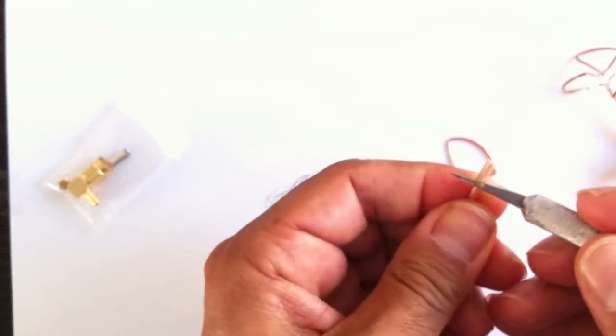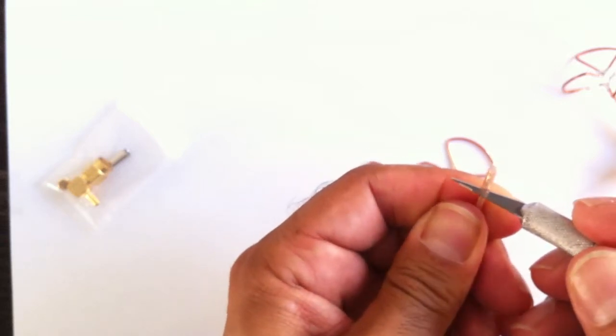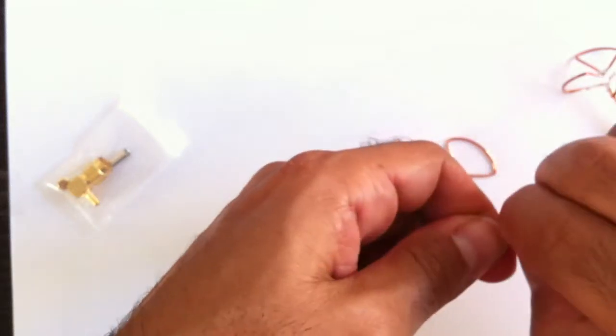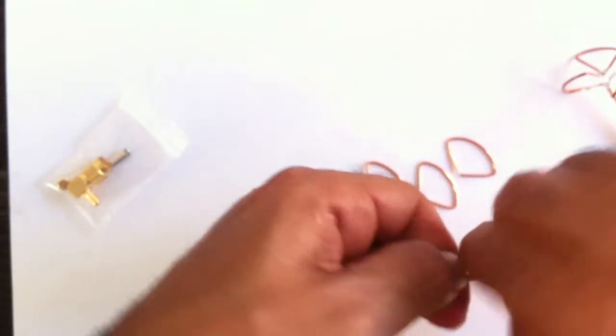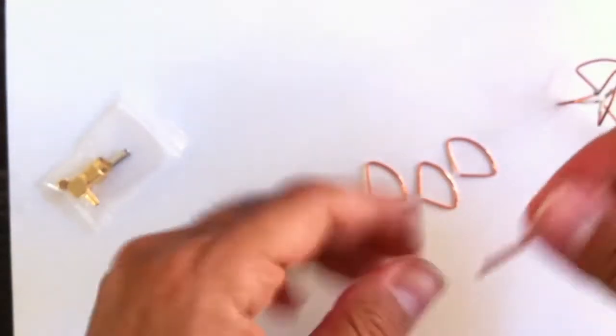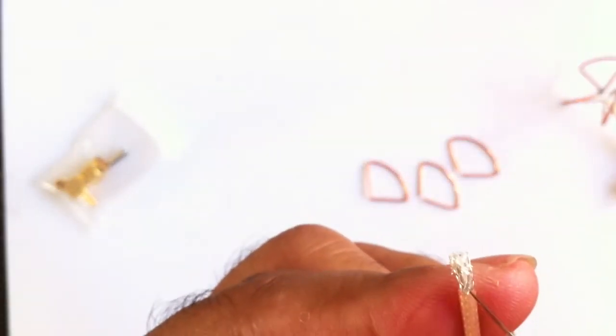So basically the next step is the coaxial cable. And what I do is use a sharp knife. And I basically cut until the point that I can feel that it's hitting the actual braiding on the coax. And then just basically separate it and remove the outer plastic. And that's pretty straightforward.